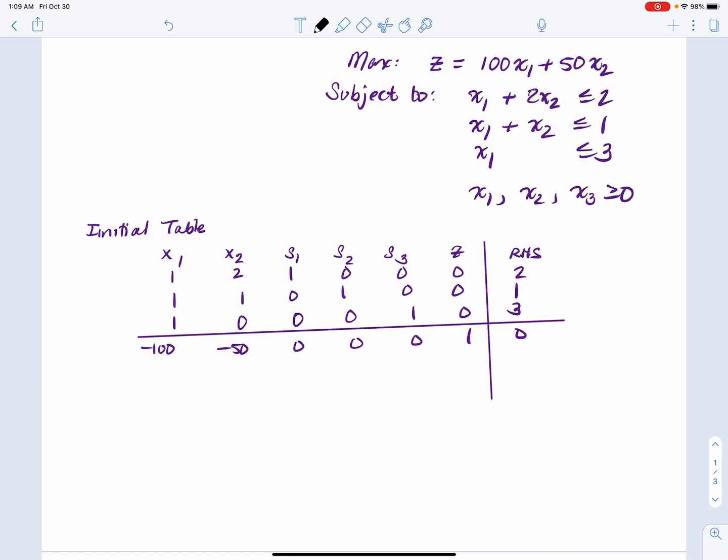So looking at this, remember what we do to initiate the first step. We go for the column that has the most negative entry in the bottom row, and that's x1, which means we're going to try to bring in as much x1 as we can. And we figure that out by computing ratios.